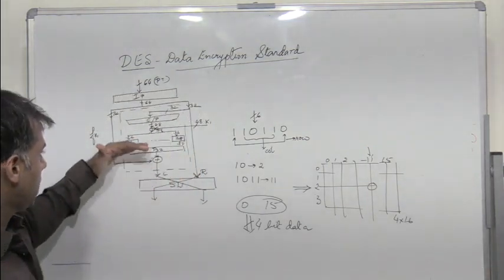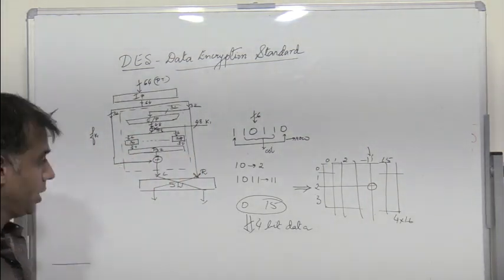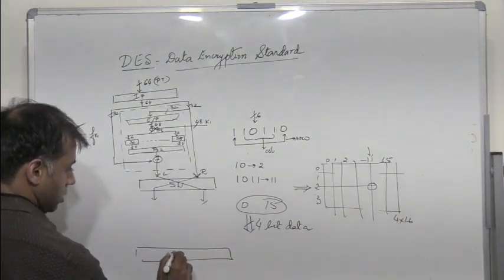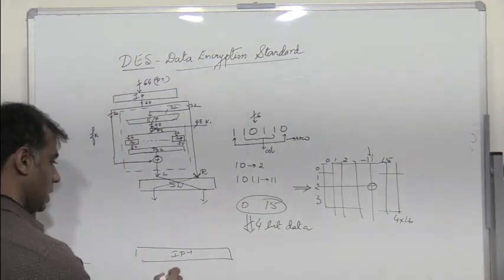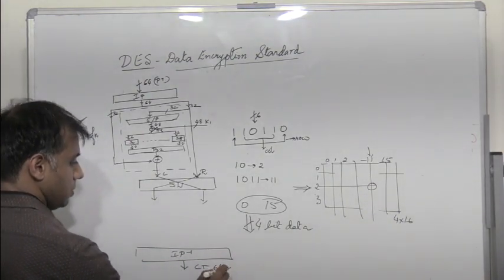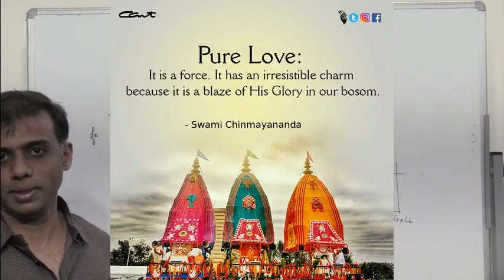Like this you have 16 rounds of operation, and then after the 16th round we have IP inverse, and then finally we get the ciphertext which is of length 64 bits.